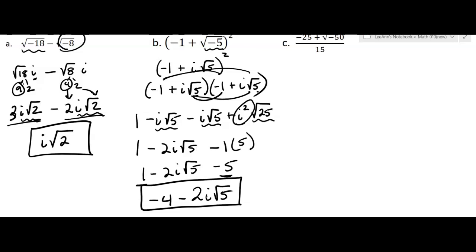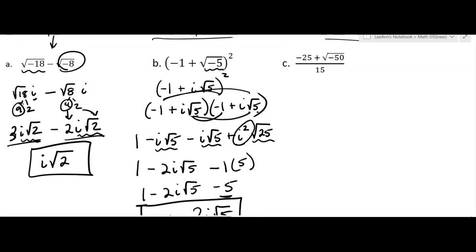What's that one? One more. Okay, so we have this one. I've got negative 25. Okay, that's fine. I can have a negative 25. No problem there. Plus, now this is going to be the square root of 50.